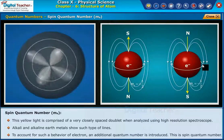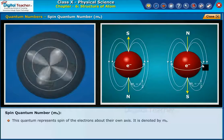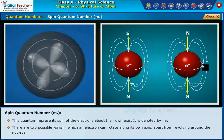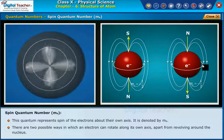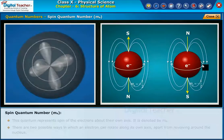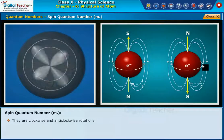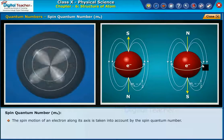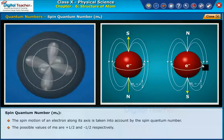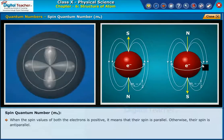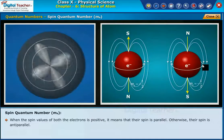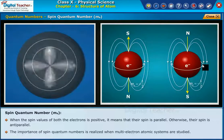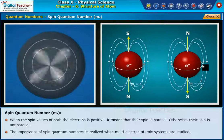This is spin quantum number. This quantum represents spin of the electrons about their own axis. It is denoted by m_s. There are two possible ways in which an electron can rotate along its own axis apart from revolving around the nucleus. They are clockwise and anticlockwise rotations. The spin motion of an electron along its axis is taken into account by the spin quantum number. The possible values of m_s are plus 1 by 2 and minus 1 by 2 respectively. When the spin values of both the electrons is positive, it means that their spin is parallel. Otherwise, their spin is anti-parallel.